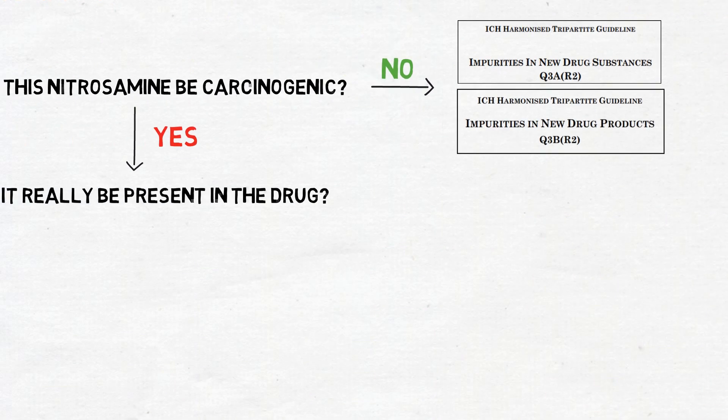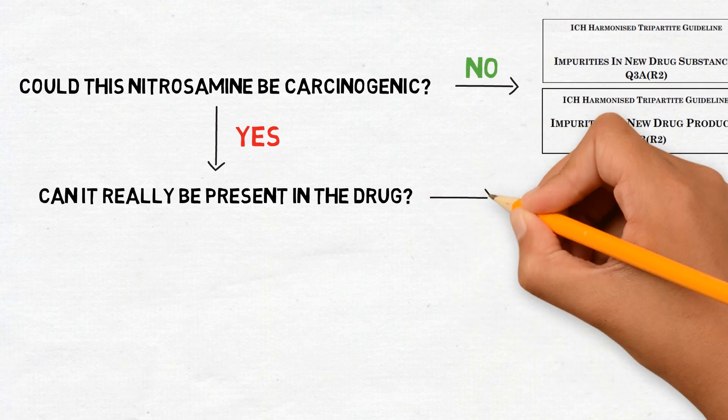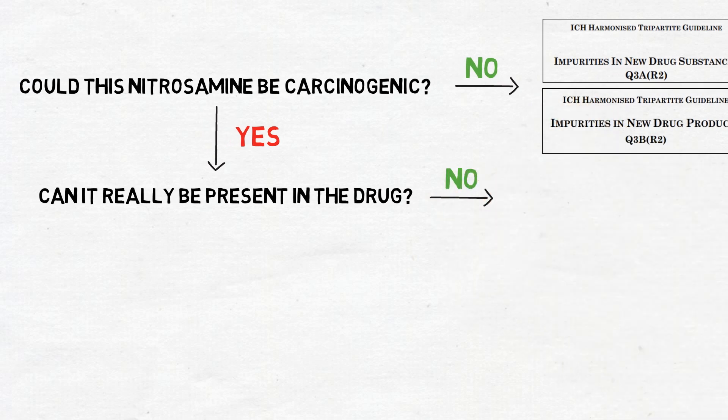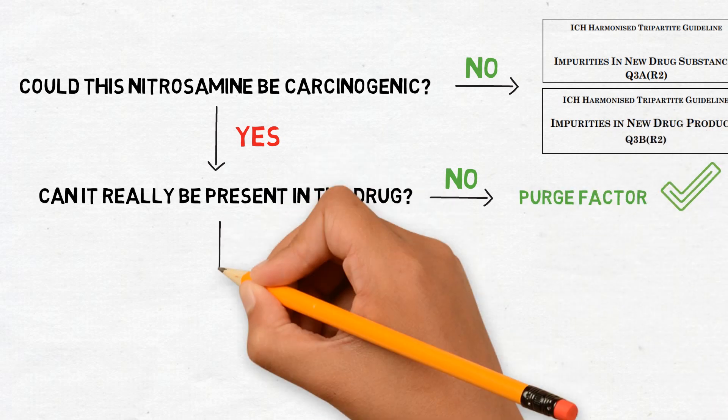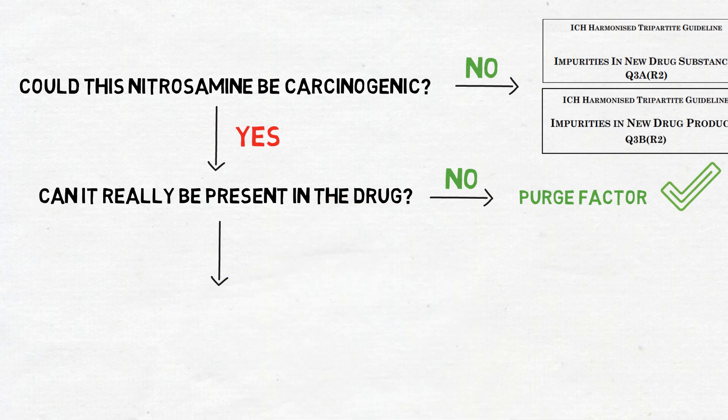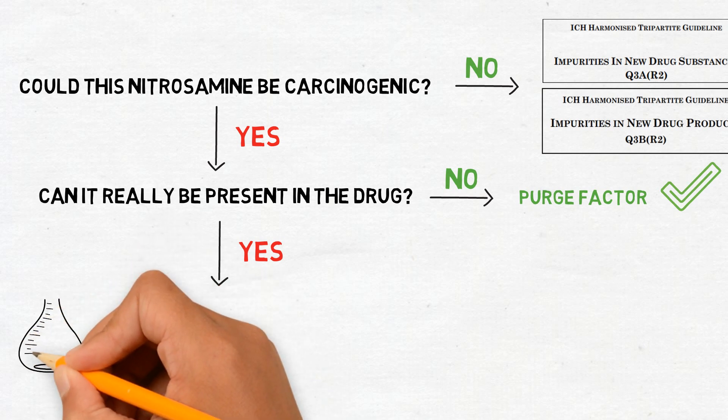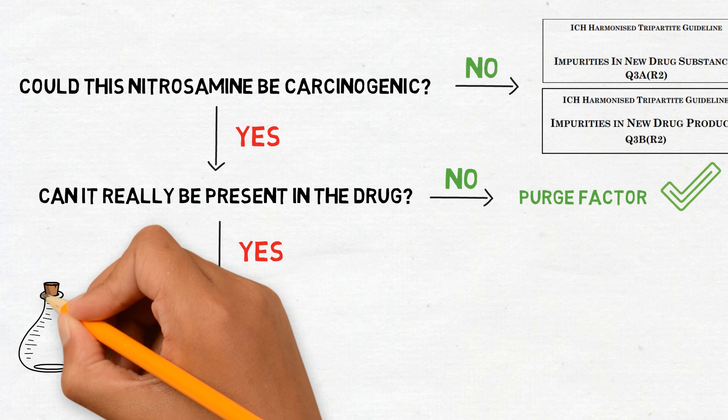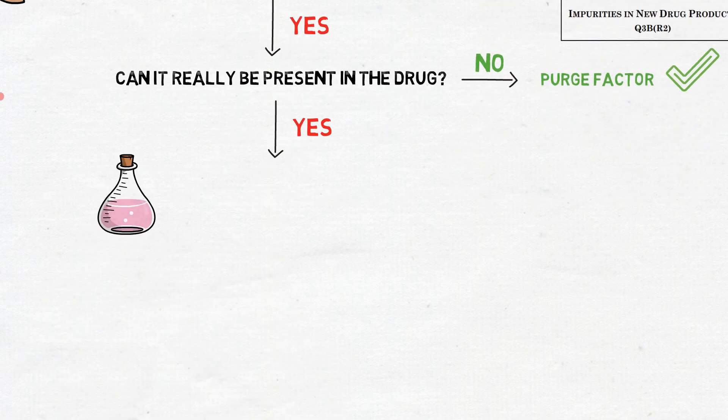If the purge factor is correctly calculated and indicates the impurity is actually eliminated, the absence of the impurity can be justified with this approach. In case it is not possible to demonstrate the elimination of the nitrosamine using this strategy, the recommendation is to test the drug substance or drug product using analytical methods in order to quantify the impurity.